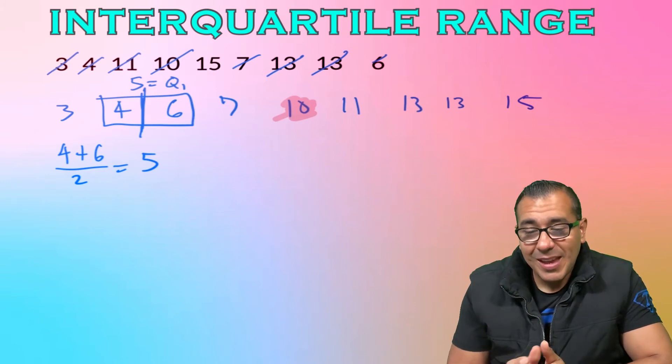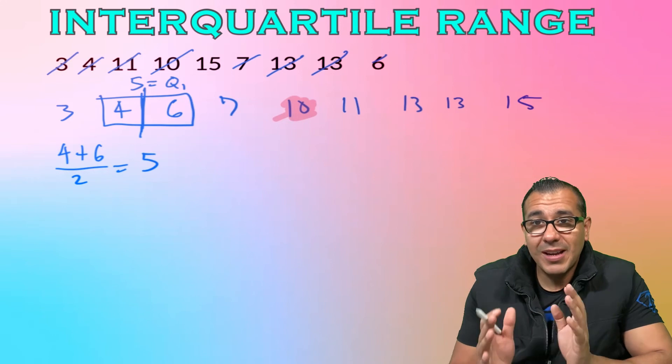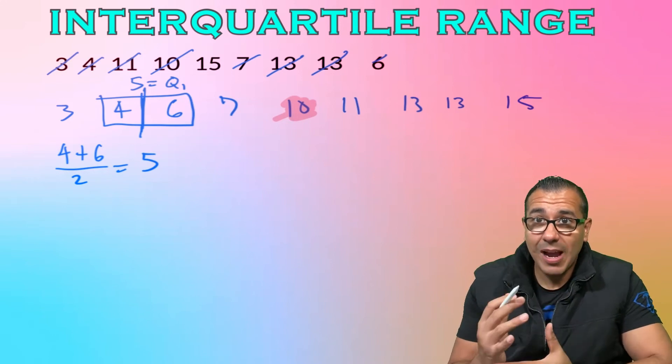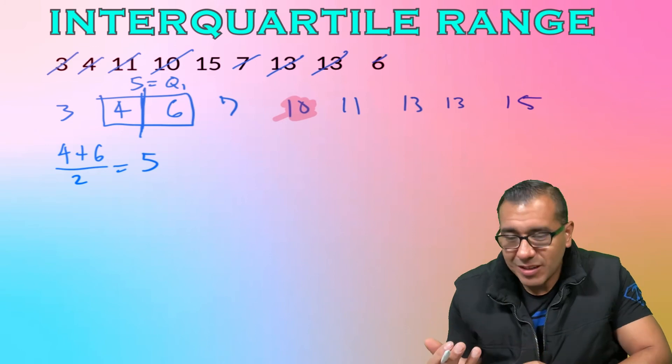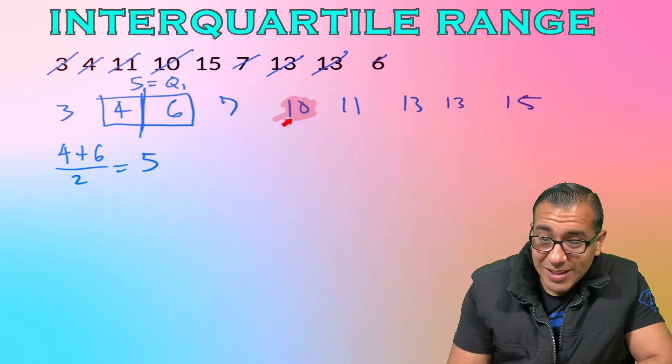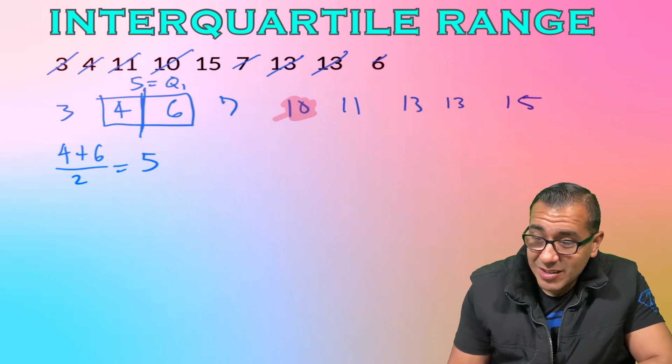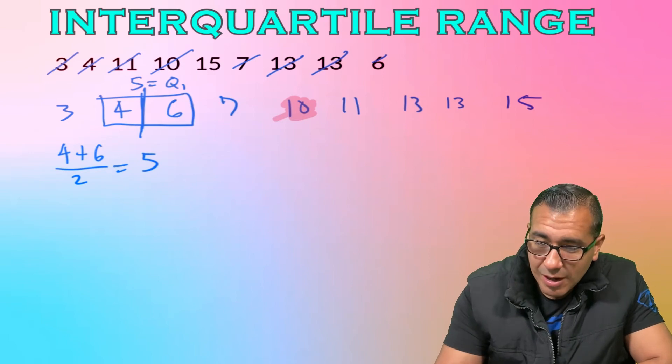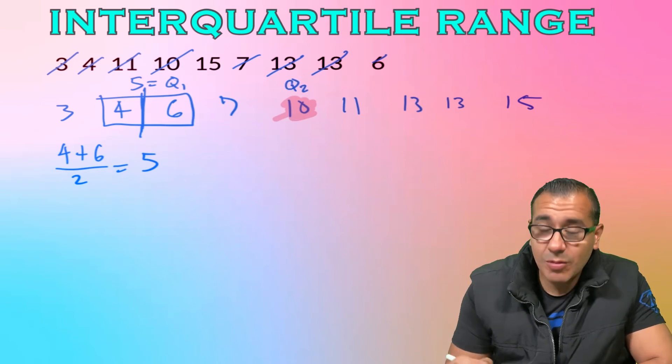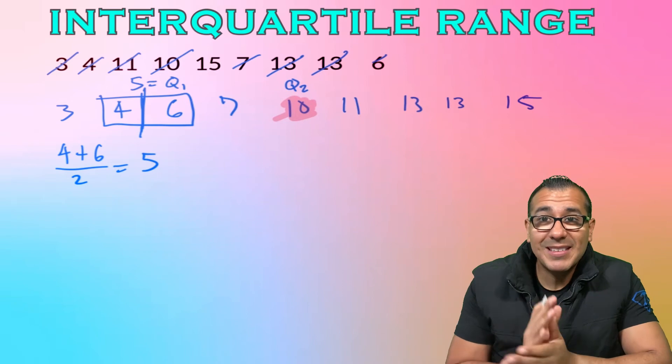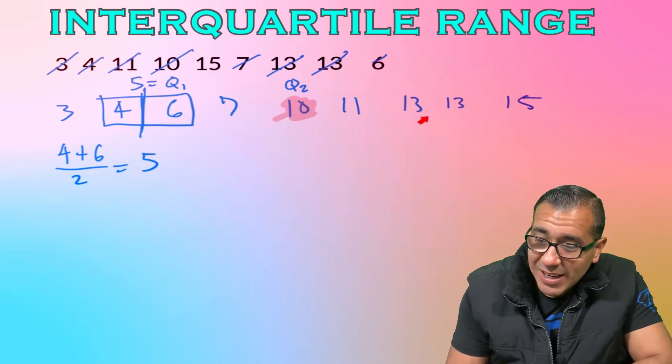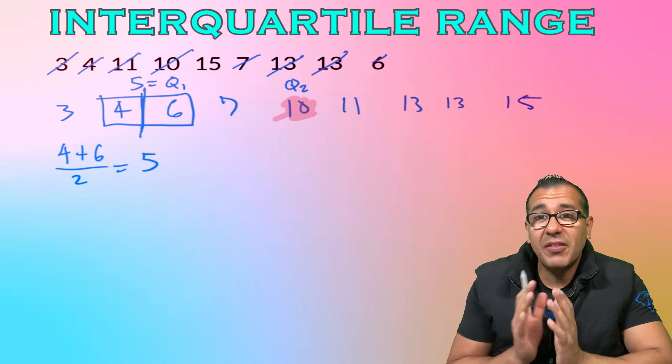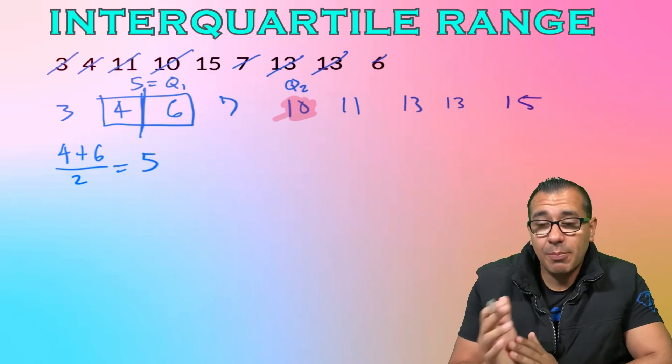Remember our goal is to find what the IQR is to help describe that middle 50 percent. This ten is our median, which is our Q2, that midpoint. Now what we're going to do is take this upper half and take 50 percent of that upper half.